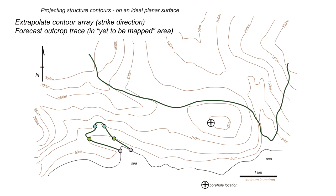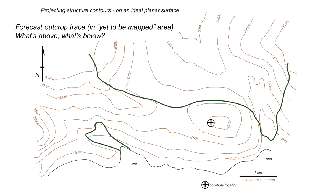There's our outcrop trace of the geological boundary down by the sea, completing the full forecast of the outcrop trace around the map. Finally, we shade in what's below the geological boundary. The valley area we identified earlier is below the boundary, and we extrapolate that information across the northern part of the map. The patch down by the sea is also below the geological boundary. This completes our geological map, identifying both the continuity of the boundary and the rocks that lie beneath it.